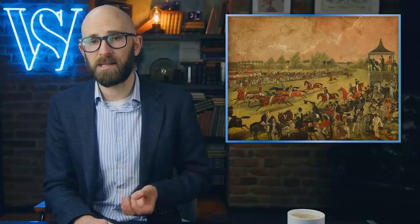In the 1800s, a 'ringer' was a stand-in for a horse at a race. Sometimes people would clandestinely replace a slower horse with a faster horse — or vice versa — for later betting purposes. The horses had to look extremely similar in order for this con to be pulled off. In 1882, an article in the Manitoba Free Press described this: 'A horse that is taken through the country and trotted under a false name and pedigree is called a ringer.' The word 'ringer' started out as a word for someone who rang bells, such as the bells in a church.